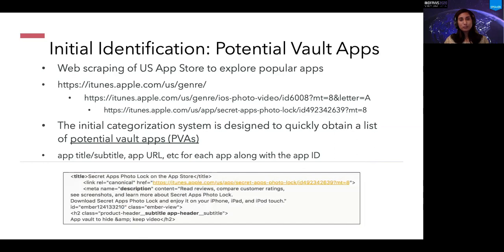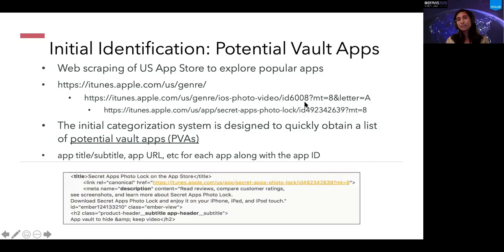In the initial identification system, the applications we identify and obtain are called potential vault apps, or PVAs. In step one, we look into the US app store using a specific genre — for example, iOS photos and videos — and look at letter A on one of the landing pages. From the landing page, we identify a bunch of app IDs and look at applications one by one based on those IDs. The initial categorization quickly obtains a list of PVAs by collecting the app title, subtitle, app URL, and app ID for each app.